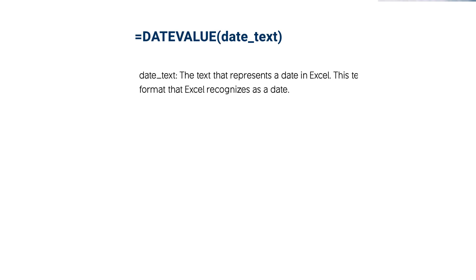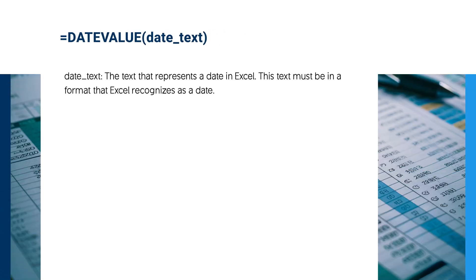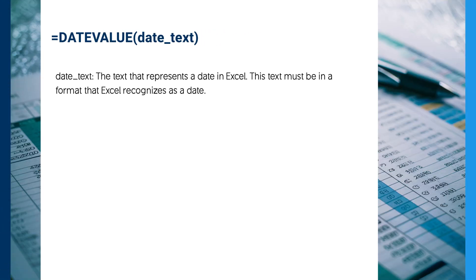Here's what each part of the DATEVALUE function means. Date text is the text that represents a date in Excel. This text must be in a format that Excel recognizes as a date, such as 01-01-2024 or January 1st, 2024. The text must be enclosed in quotation marks if you are typing it directly into the function.